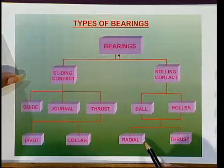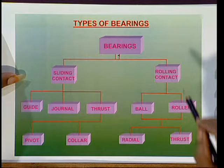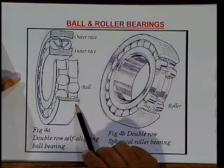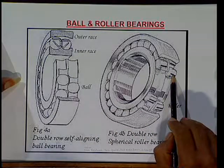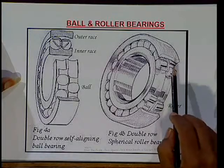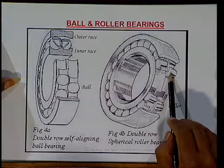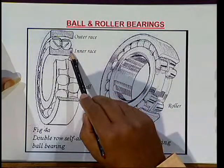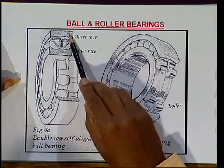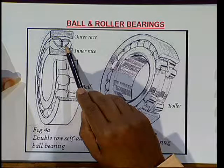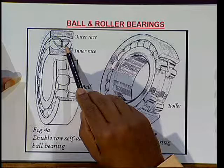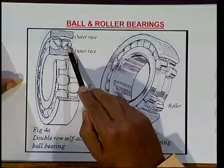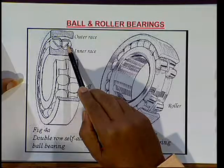To keep the rollers in position, we require a separator or cage. This cage is generally manufactured with brass or other materials having a low coefficient of friction. You can see here the rollers and the balls. We can use ball bearings in single row or double row. In the figure, you can observe two rows. Here is a practical example of a roller bearing, which has an outer race, inner race, and balls in between. The balls are positioned in a particular position by the cage.